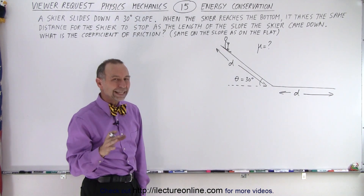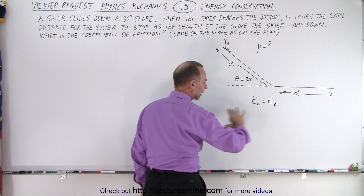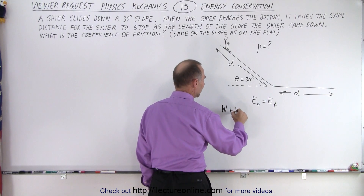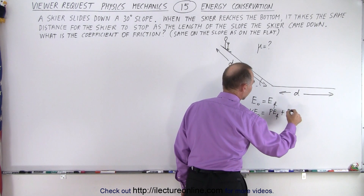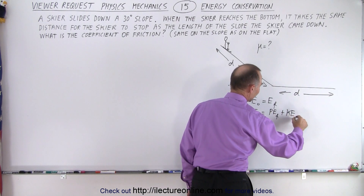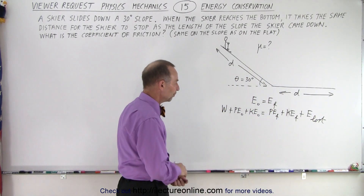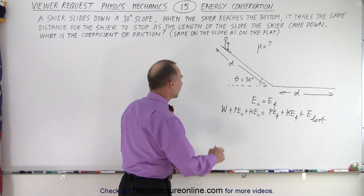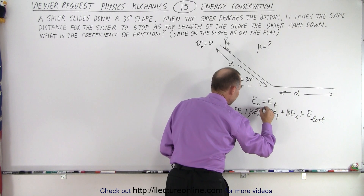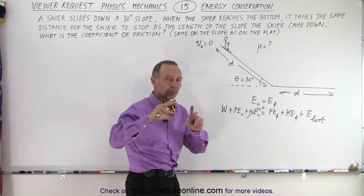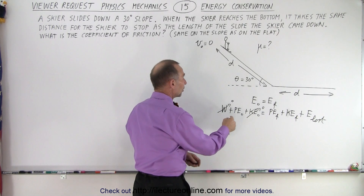The way to solve this problem is to use the energy conservation technique. The energy initial is equal to the energy final. Writing the full equation: any work put into the system, plus initial potential energy, plus initial kinetic energy equals final potential energy, plus final kinetic energy, plus any energy that was lost. The skier starts from rest, so there's no initial kinetic energy. We're not pushing the skier down the hill, so there's no initial work put into the system.